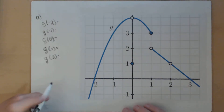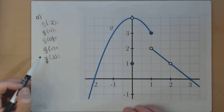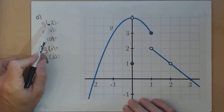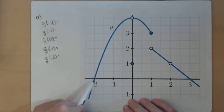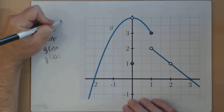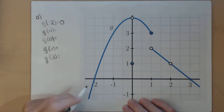For part A, we're asked to calculate some function values from our graph. The first one is g of negative 2. So when the input is negative 2, we see our output is 0. So g of negative 2 equals 0.